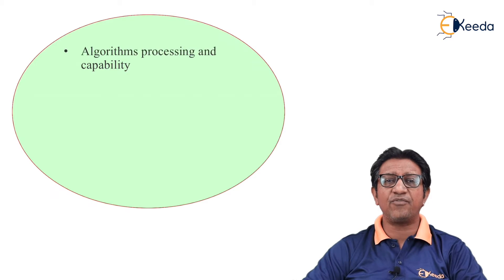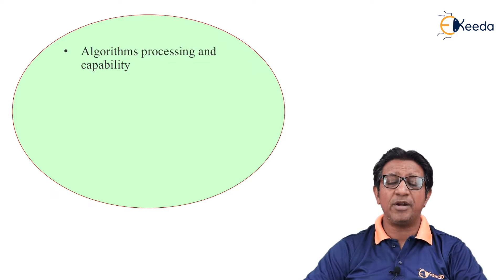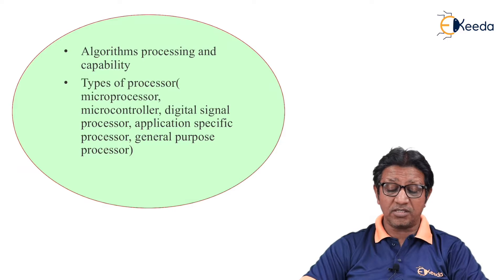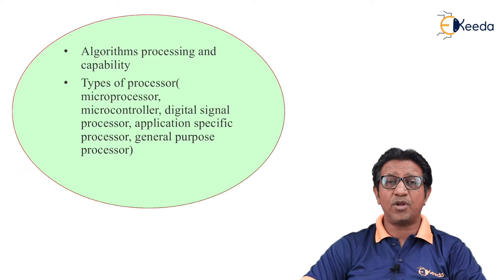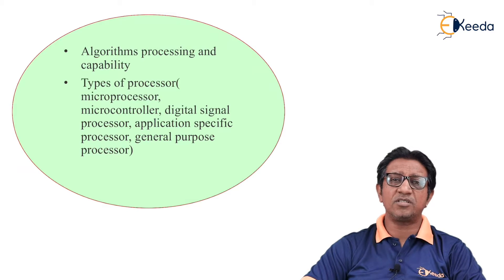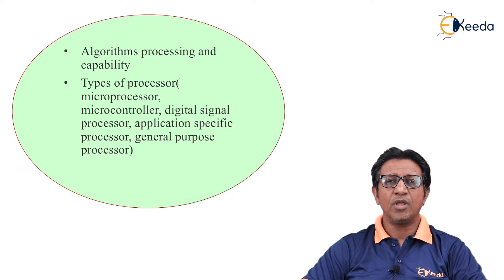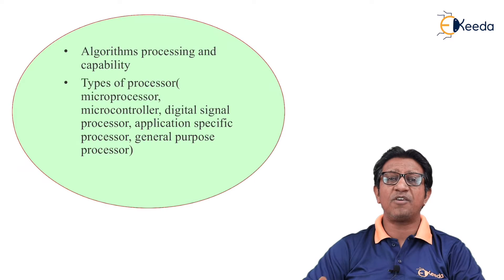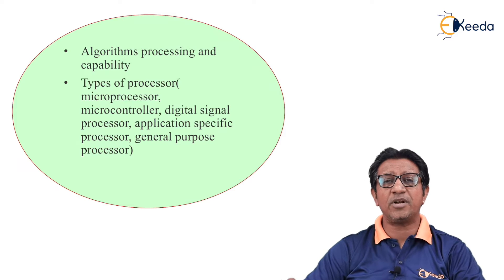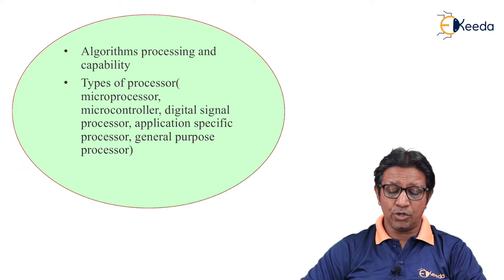Different types of processors that can be used in embedded systems are: microprocessor, microcontroller, digital signal processor, application-specific processor, or general-purpose processor. The processor is selected depending on the functionality, complexity, and the application for which the embedded system is used.